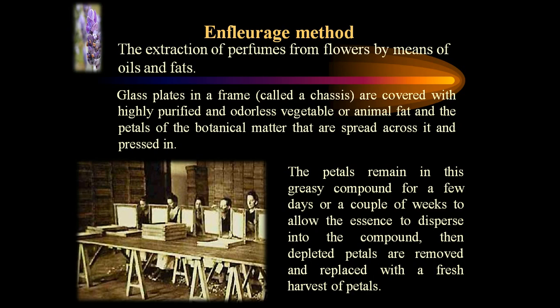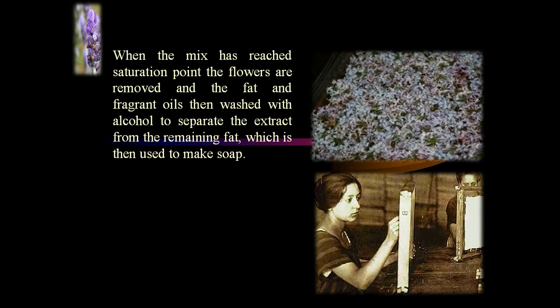In the enfleurage method, the extraction of perfumes from flowers by means of cold fat is done. Glass plates in a frame are covered with highly purified and odourless vegetable or animal fats, and the petals of the botanical materials are spread on the fat. The petals remain in this greasy compound for a few days to allow the essence to disperse into the compound. Depleted petals are removed and replaced with fresh petals each time. Once the mix has reached saturation point, the flowers are removed and the fat and fragrance oils are washed with alcohol to separate the extract from the remaining fat. This fat may also be used in preparation of pomades.